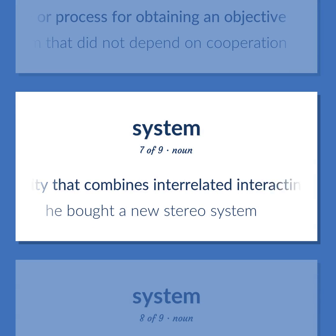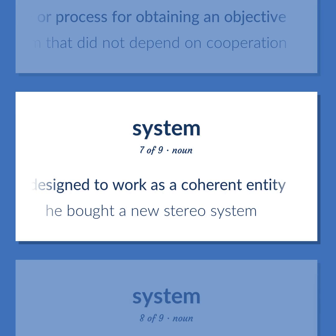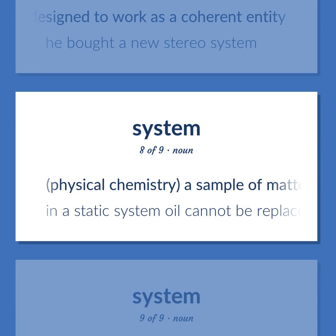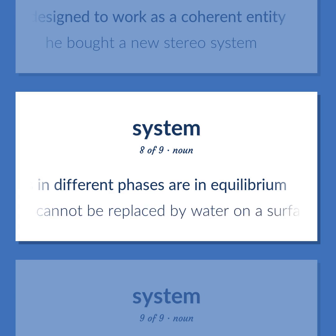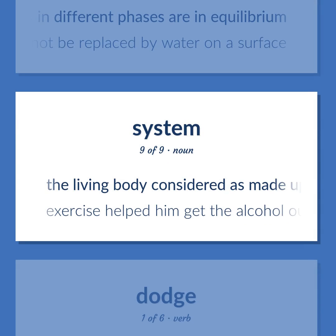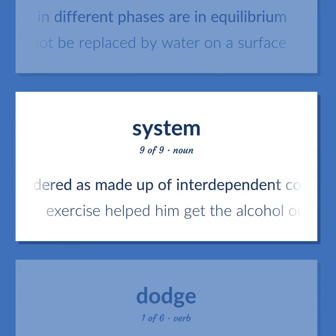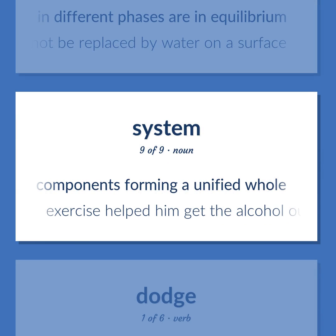System: Instrumentality that combines interrelated interacting artifacts designed to work as a coherent entity — he bought a new stereo system. Physical chemistry: a sample of matter in which substances in different phases are in equilibrium — in a static system oil cannot be replaced by water on a surface. The living body considered as made up of interdependent components forming a unified whole — exercise helped him get the alcohol out of his system.